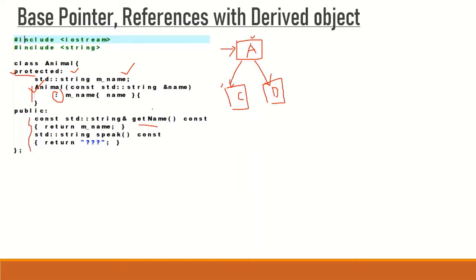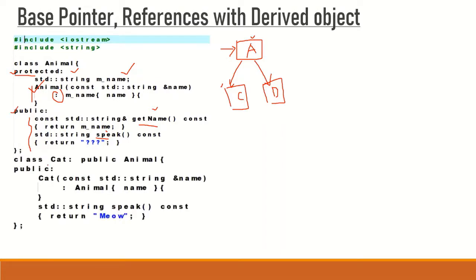So only those classes that have a direct relationship with Animal can access its constructor. In addition to this, the Animal class has two member functions: one member function will return the name of an animal, and the second member function will return how an animal speaks. Both member functions are made public.